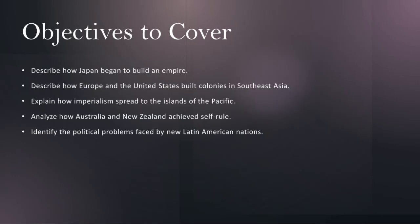Third, we'll be explaining how imperialism spread to the islands of the Pacific. The islands of the Pacific Ocean were not immune to the forces of imperialism that swept across the globe in the 19th and early 20th centuries. We'll trace the expansion of European powers, particularly Britain, France, Germany, and the US, into the Pacific region.